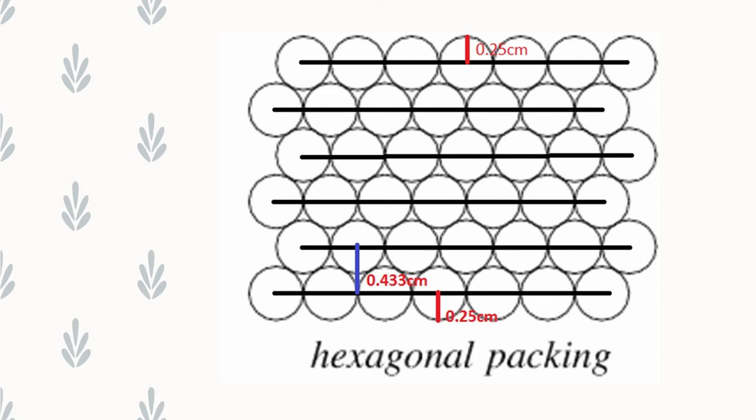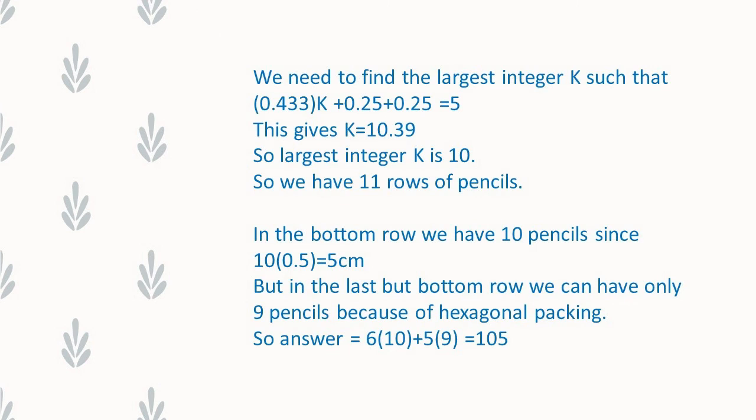To find that, I am going to write the equation as 0.433 times k plus 0.25 plus 0.25 equal to 5. The 0.25 corresponds to the radius of the circles. This accounts for the bottom and topmost layer circles, which does not add in the 0.433 times k.